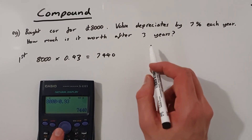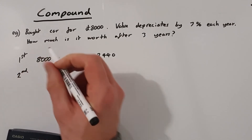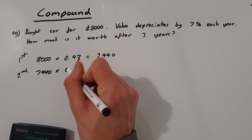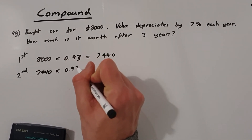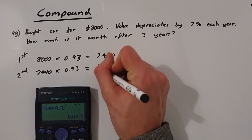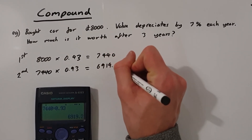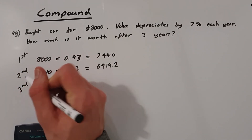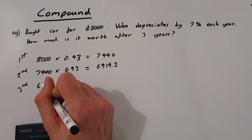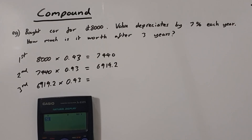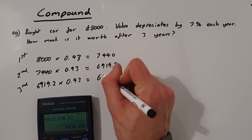We want the value after three years, so we keep going. In the second year our new value is £7,440 and we take 7% off again by multiplying by 0.93: 7,440 multiplied by 0.93 gives us £6,919.20 — the price after year two. For the third year we start with £6,919.20 and multiply by 0.93 again: 6,919.20 multiplied by 0.93 gives us £6,434.